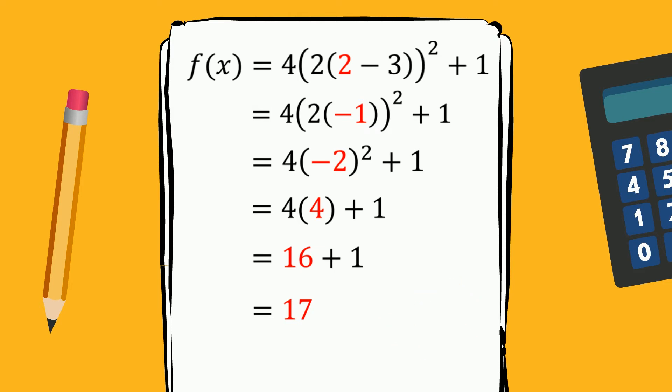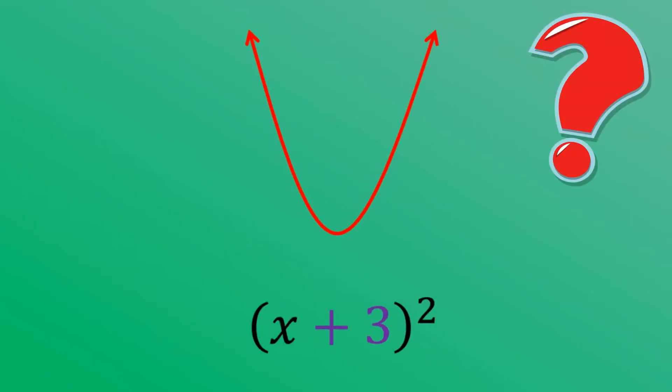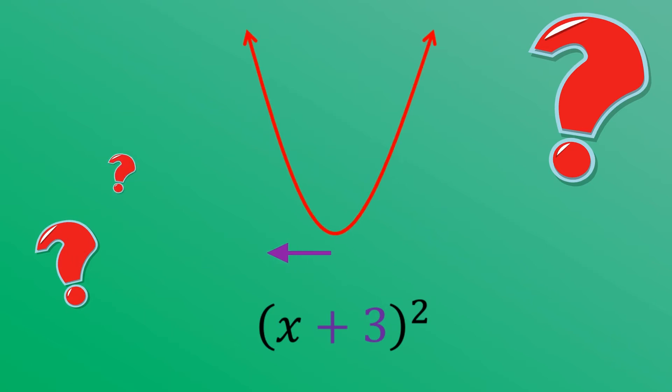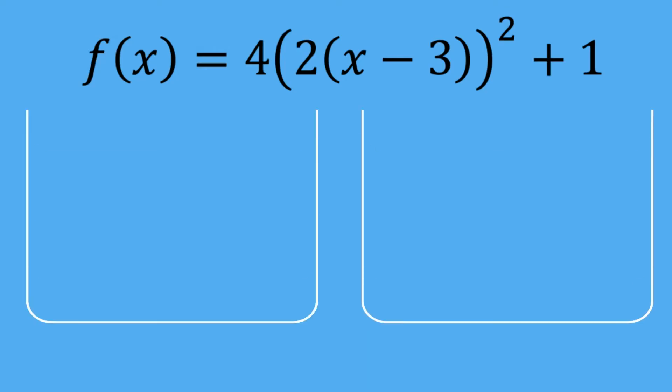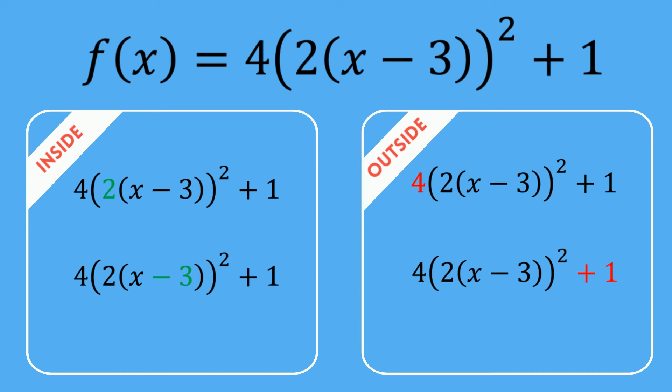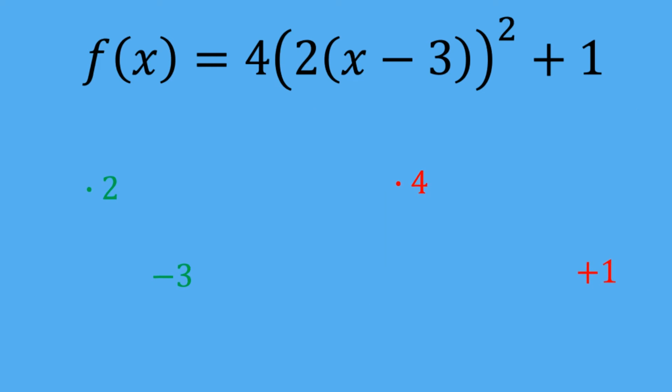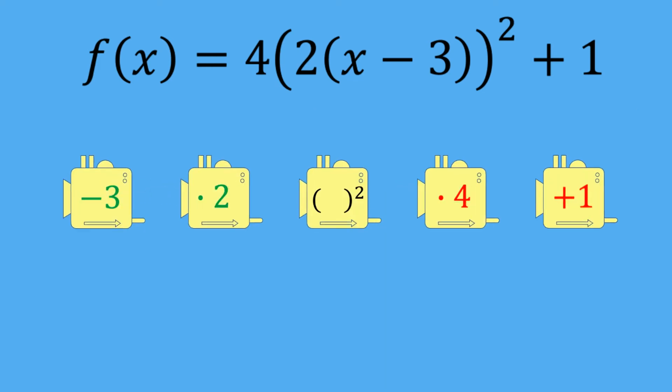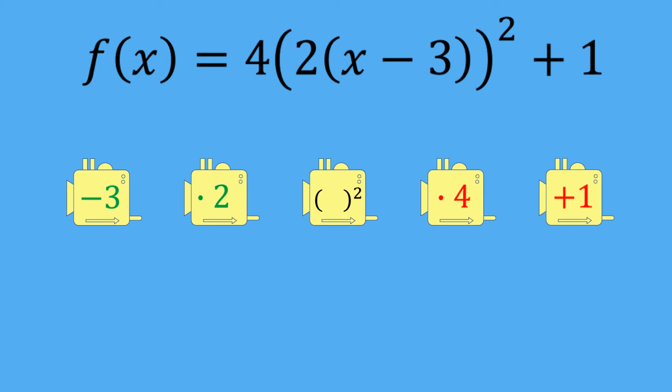So then, why is it when we go to graph the function, we then have to apply the inside transformations in the opposite way? To get to the heart of this question, we are going to need to look at the function in a different way. Rather than inside or outside transformations, we'll break the process into individual functions. This way we can better keep track of the inputs and outputs of each transformation.